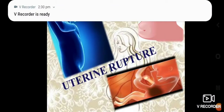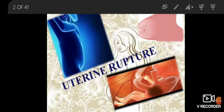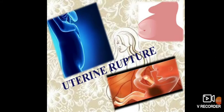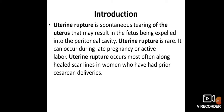Hello everybody, this is Pragya. Today we deal with uterine rupture. Uterine rupture is spontaneous tearing of the uterus that may result in the fetus being expelled into the peritoneal cavity. It is rare and can occur during late pregnancy or active labor. Uterine ruptures occur most often along healed scar lines in women who have had prior cesarean sections.